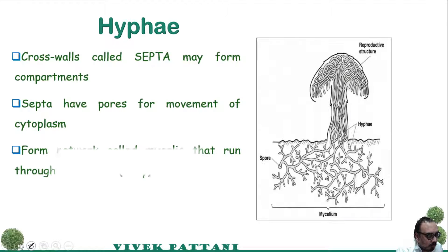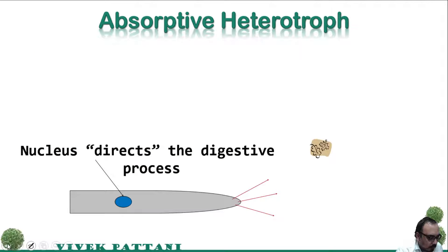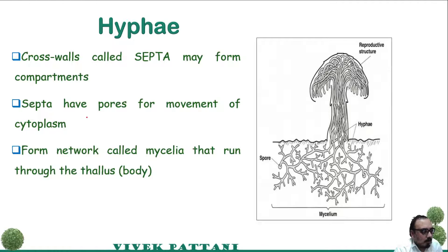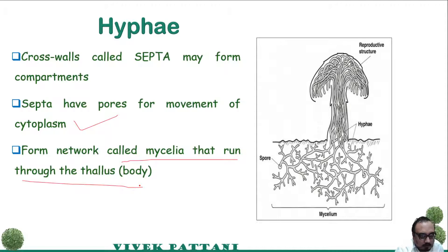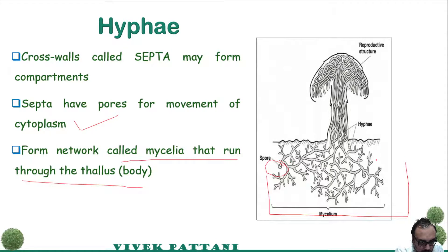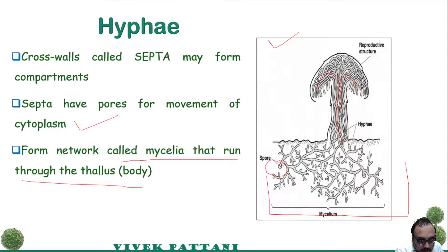Hyphae cross walls called septa may form compartments. Septa have pores for the movement of cytoplasm and form a network called mycelia that runs through the thallus body. The whole structure is called a mycelium and it contains spores. The diagram of a mushroom shows hyphae that elongate to form the reproductive structures of fungi.